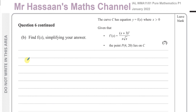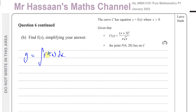If I want to find f of x, what I've got to do is integrate the gradient function. If I integrate the gradient function, I'll get y, which is f of x. So I need to integrate the gradient function, which is (x plus 3) squared over x times root x.